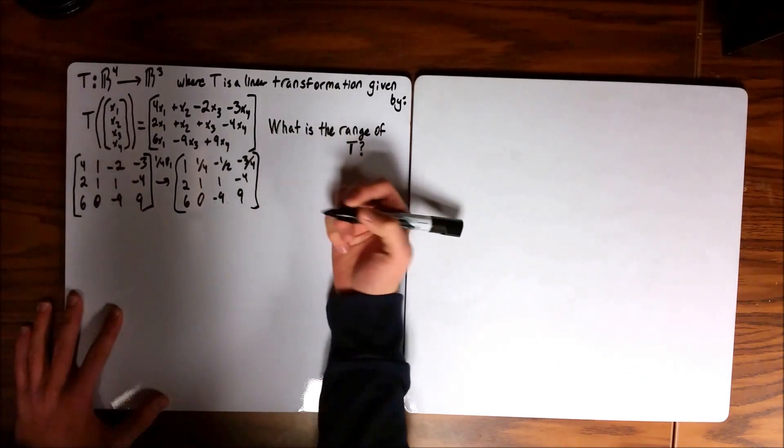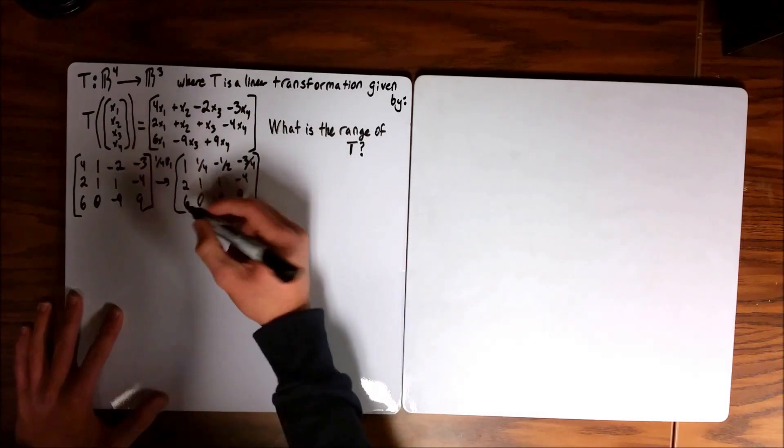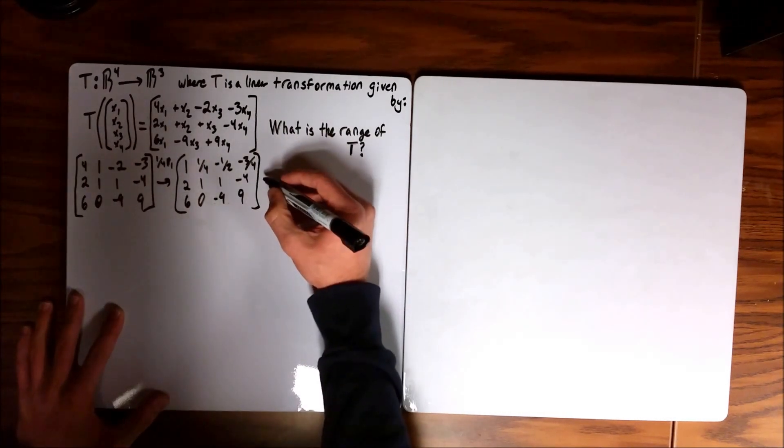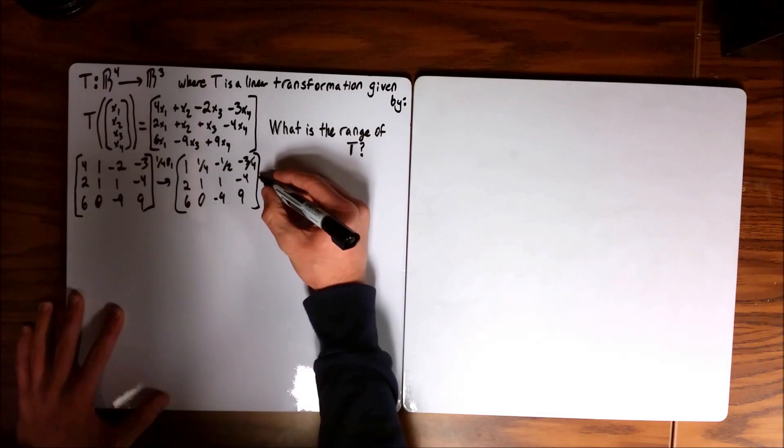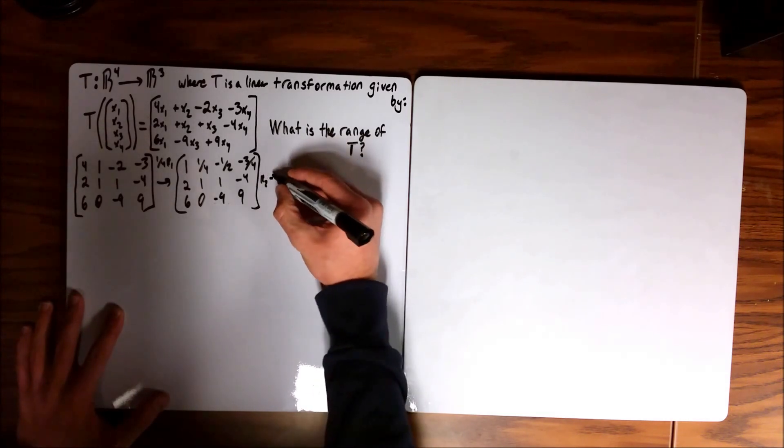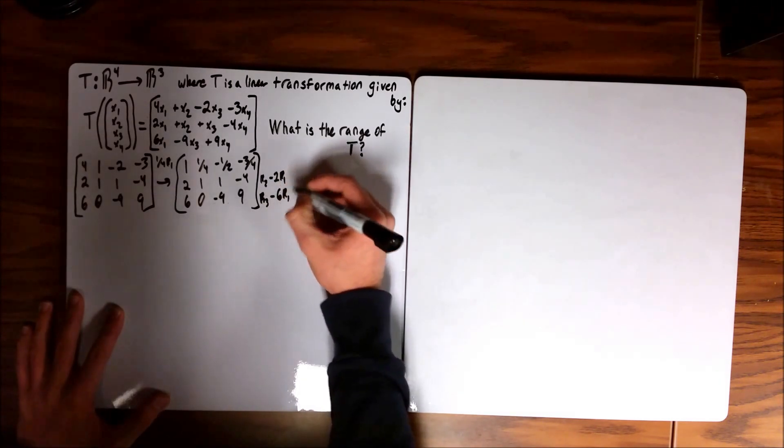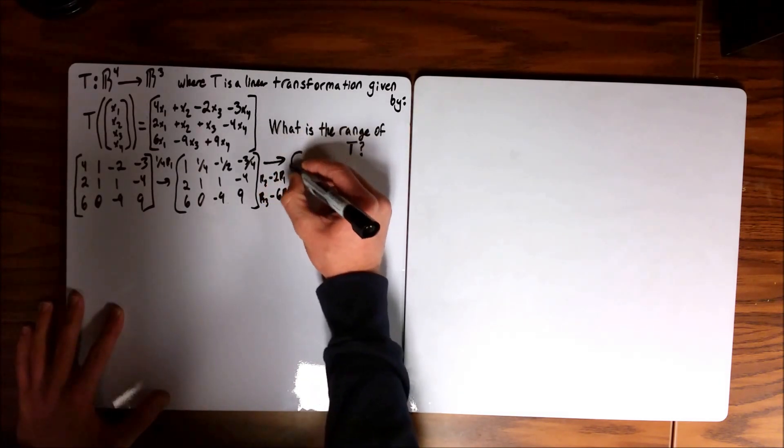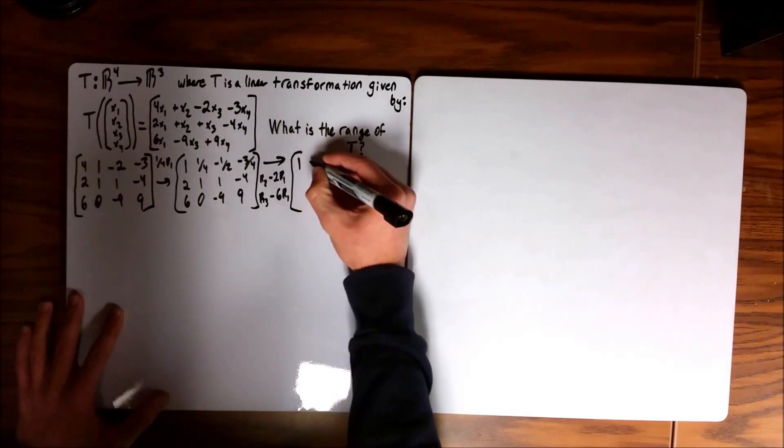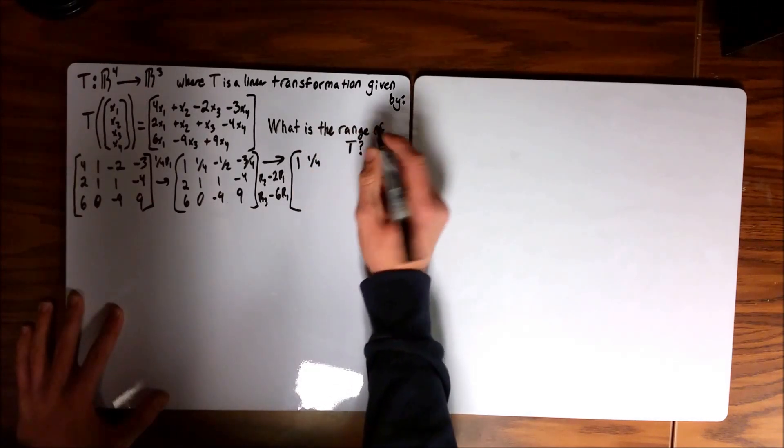And then we need to get the next two matrices, the next two columns, to get rid of these, turn them into zeros. So we're going to take R2 and subtract 2 row 1, we're going to take R3 and subtract 6 row 1. So just keep the first column the way it was.